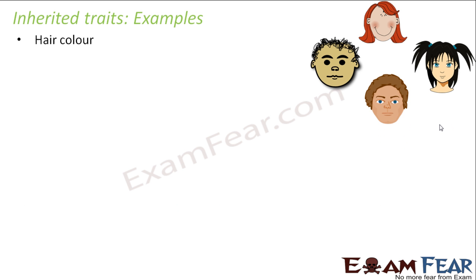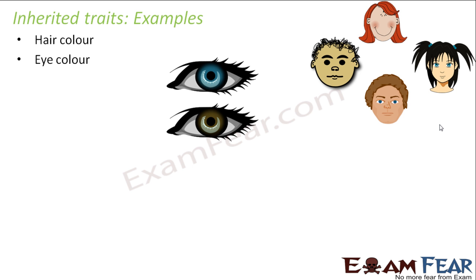Let us look at some examples. Hair color is one — people have many different hair colors: some have black hair, some are blonde, some have brown hair, some have curly hair, some have extremely straight hair, and some have wavy hair. So hair color is an example of an inherited trait. Eye color is another example — people might have blue, black, or brown eyes. Eye color is again an inherited trait that offspring get from their previous generation.